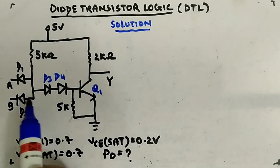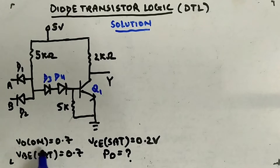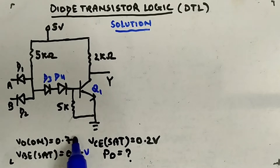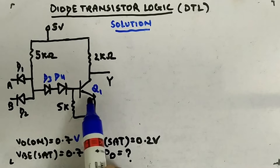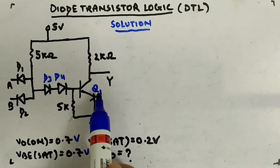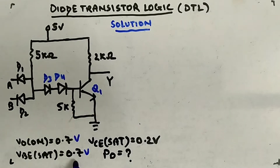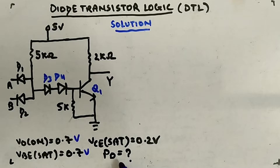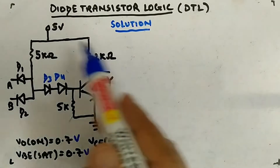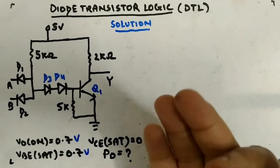The given parameters are: diode on voltage is 0.7 volt, VBE saturation is 0.7 volt, and VCE saturation is 0.2 volt. When transistor Q1 is in saturation, VBE will be 0.7 volt and VCE will be 0.2 volt. You have to calculate the power dissipated by this circuit.